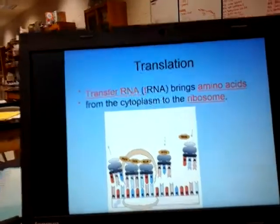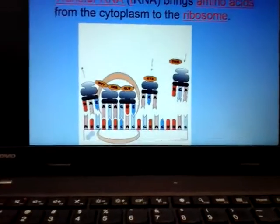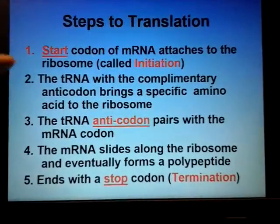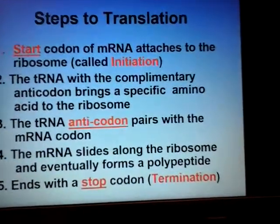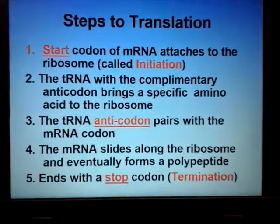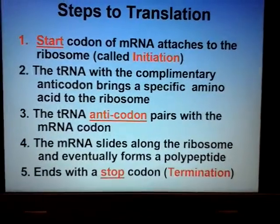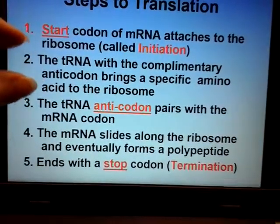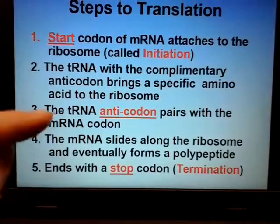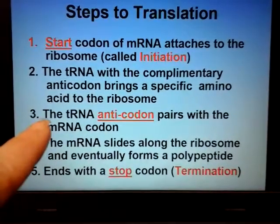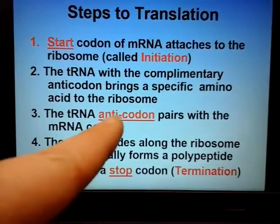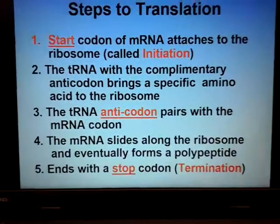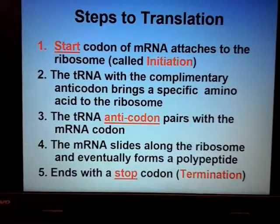Eventually, the ribosome reaches the stop codon. There's no matching transfer RNA for a stop codon — the measuring cup is empty. The ribosome knows the protein is done. This is termination. The start codon is always AUG — the ribosome starts reading at the first AUG it sees and keeps adding amino acids until it hits the stop codon.